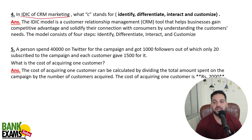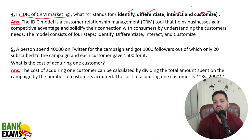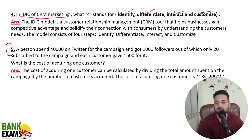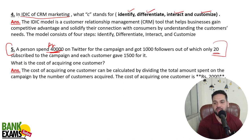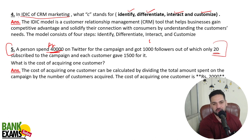IDIC in CRM marketing: I means Identify, D means Differentiate, I means Interact, and C means Customize. Full forms are important to remember. This is a very basic question — even if you haven't studied, you should be able to answer it. For example, you spent 40,000 rupees on Twitter and got 20 subscribers, so the cost per subscriber is 40,000 divided by 20 = 2,000 rupees.